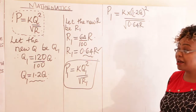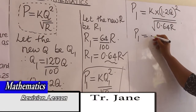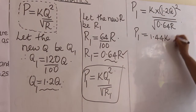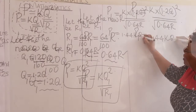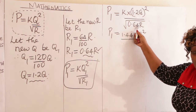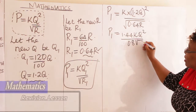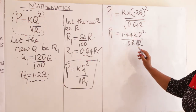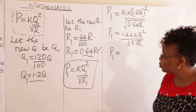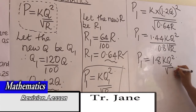There is a square root sign there. The new P = 1.44 × KQ² divided by square root of 0.64 times square root of R. Square root of 0.64 is 0.8, so new P = (1.44 / 0.8) × KQ² / √R = 1.8 × KQ² / √R.